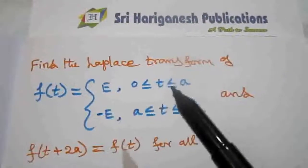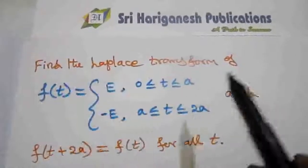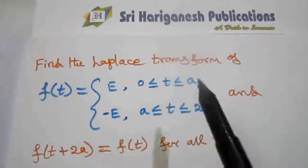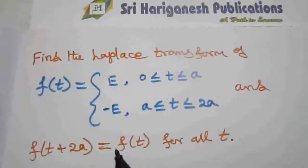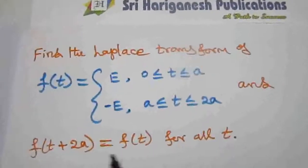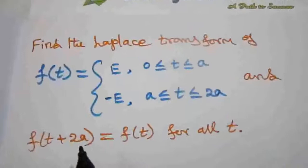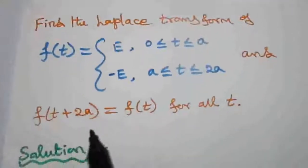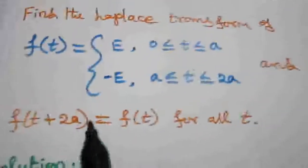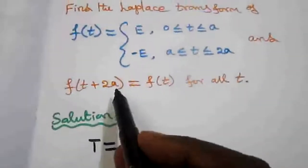First problem based on the Laplace transform of a periodic function: find the Laplace transform of f of t, where f of t equals capital E in the interval 0 to a, minus capital E in the interval a to 2a, and f of t plus 2a equals f of t for all t. This function is periodic with period 2a, so capital T equals 2a.